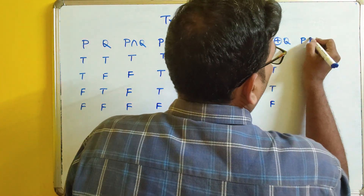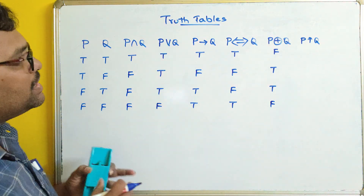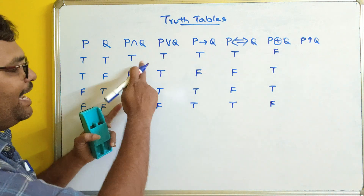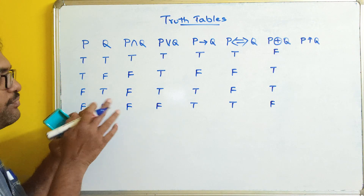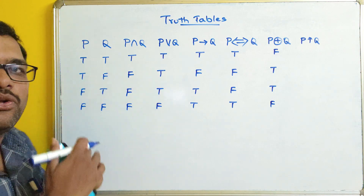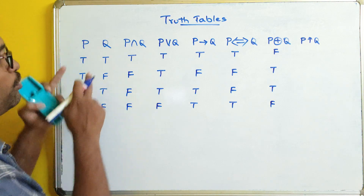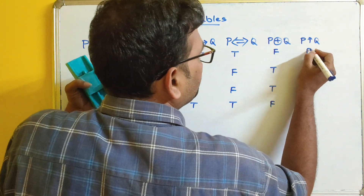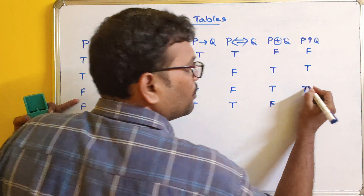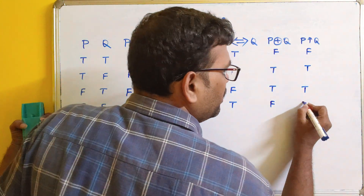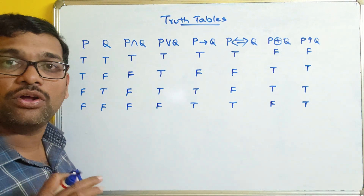Next, NAND. NAND means negation of AND. If any one of the truth values is false, then the result will be true. So: true and true gives false; true and false gives true; false and true gives true; false and false gives true. It is simply the negation of AND.